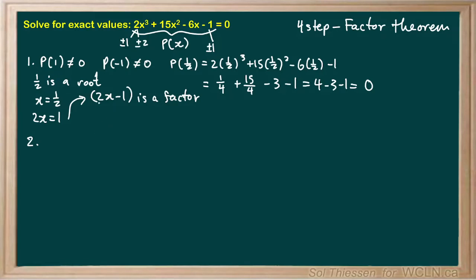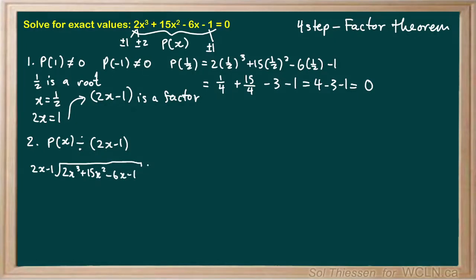Now in step 2 we're going to divide our polynomial by this factor, so we'll take P of x and divide by 2x minus 1. We can't do this synthetically, so I'll use long division — dividing 2x minus 1 into P of x, which is 2x³ plus 15x² minus 6x minus 1. I ask: what do I multiply 2x by to get 2x³? The answer is x². I multiply x² by 2x minus 1 to get 2x³ minus x², and now I subtract — the signs flip — giving 0 for the x³ terms and 15x² plus x² equals 16x².